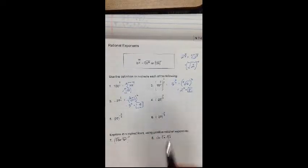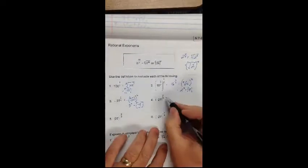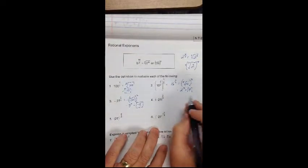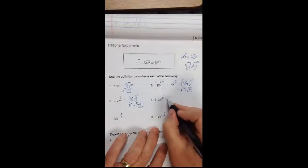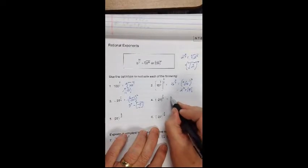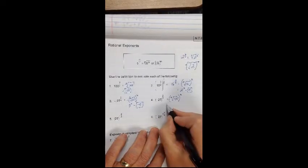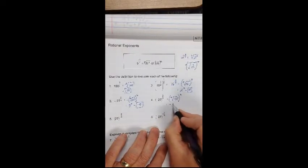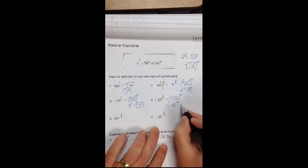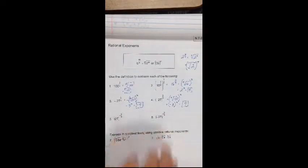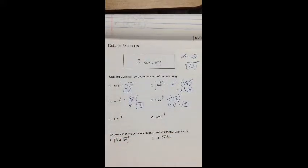Now, negative 27 to the 2 thirds — this time it is negative 27 in parentheses. So I have the cube root of negative 27 and then square that, which is negative 3 squared, which is positive 9. Different answers there — parentheses make a difference.